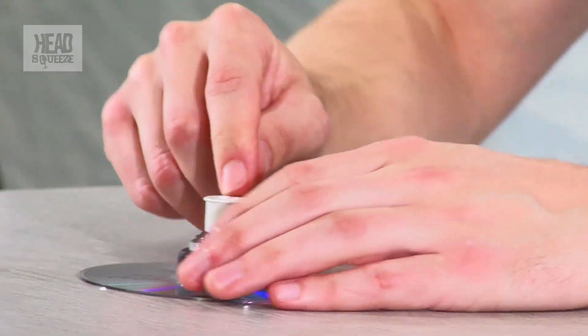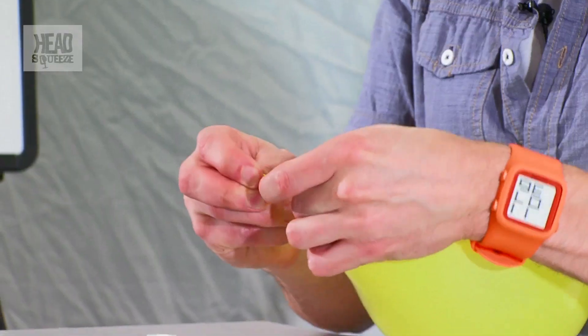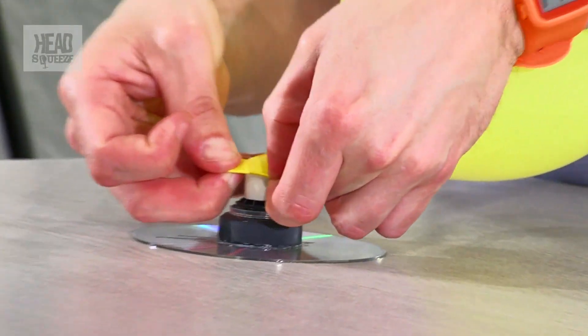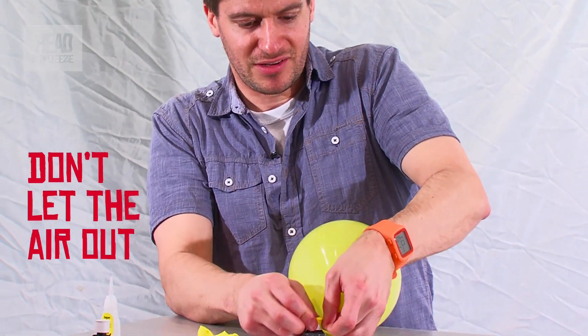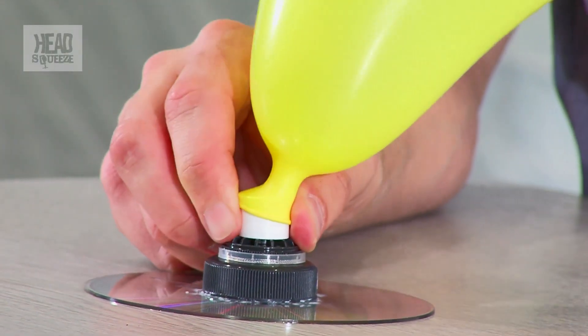Okay, to do this you want to make sure the cap's closed first of all. Blow up our balloon and then carefully pop it over the top of the cap there without letting the air out. There we go. Okay now hopefully I can let go of that balloon and the air should stay within it. Yes.